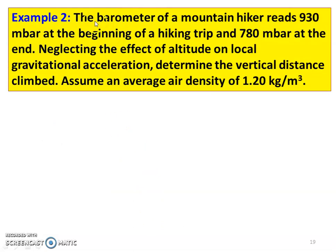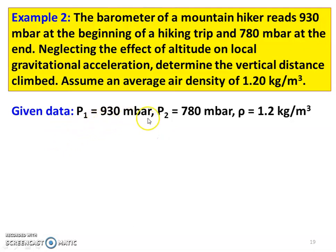Next example: A barometer. The barometer of a mountain hiker reads 930 millibar at the beginning of the hiking trip and 780 millibar at the end. Neglecting the effect of altitude on local gravitational acceleration, determine the vertical distance climbed by the hiker, assuming an average air density of 1.2 kg per meter cube. Given: P1 = 930 millibar, P2 = 780 millibar, rho = 1.2 kg/m³.